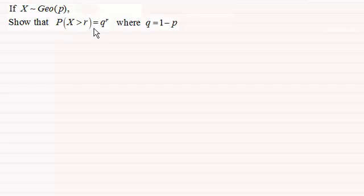Hi there. Now in this video, what I want to do is show you this result here: that if X follows a geometric distribution with the parameter P (P remember is the probability of success), to show you that the probability that X is greater than r is equal to q to the power r, where q is equal to 1 minus P.